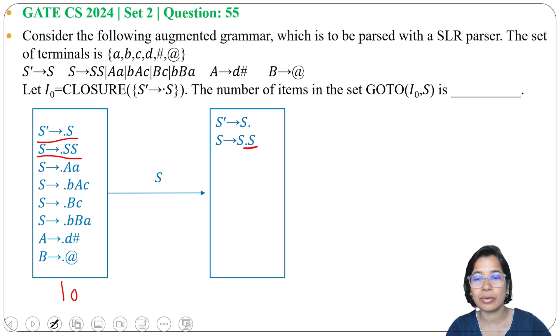need to write all S productions: S → •SS, S → •Aa, S → •bAc, S → •Bc, S → •bBa. As here dot is before A and dot is before B, we need to write both A production and B production. So A → •d#, B → •@.